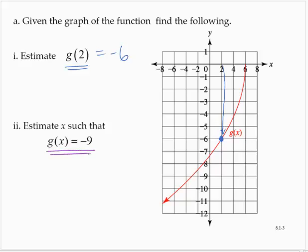x such that g of x is equal to negative 9. We want the output to be negative 9. Well, the output is negative 9 at this point, which appears to be at about negative 3. So, x equals negative 3.